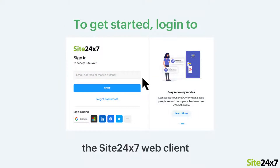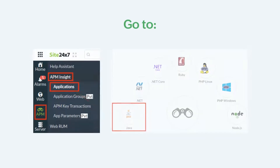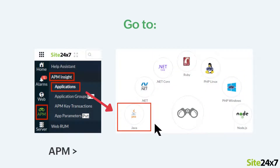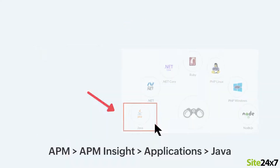To get started, log in to the Site247 web client. Now, go to APM, APM Insight, Applications, and click the Java icon.